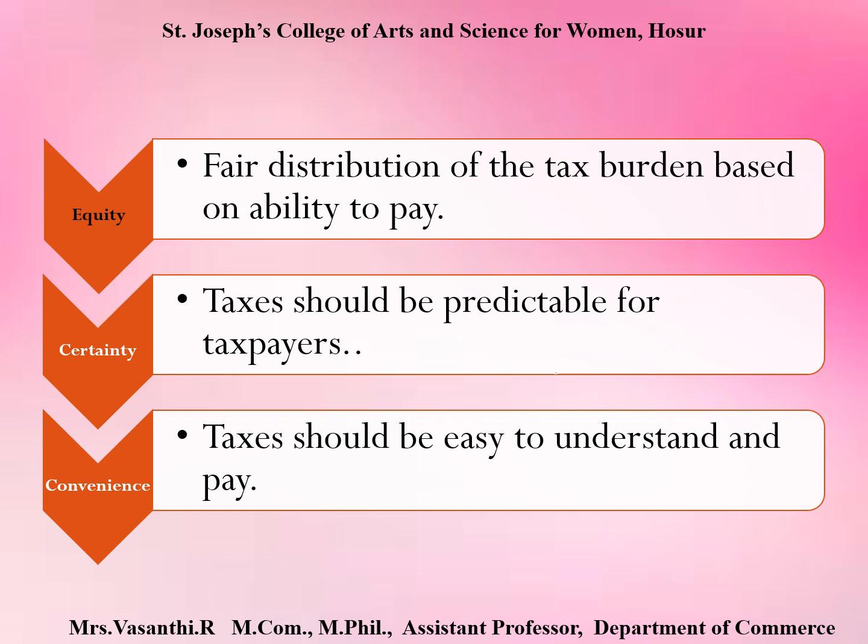The eighth objective is certainty — tax obligations should be predictable for taxpayers. The last objective is convenience — taxation should be convenient for all taxpayers, meaning it should be easy to understand and easy to pay.